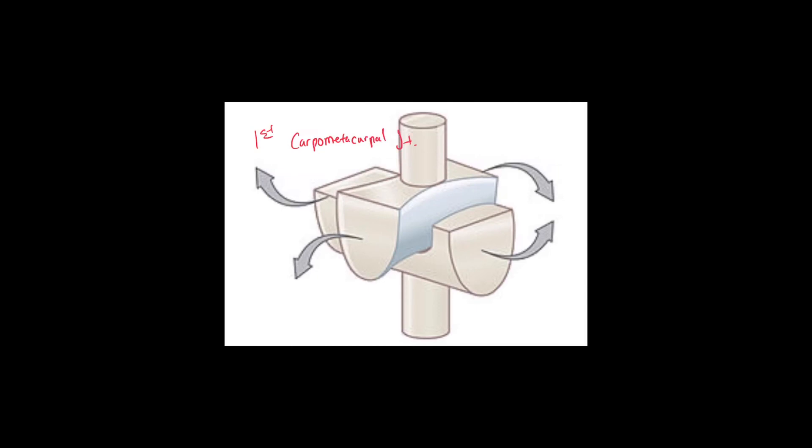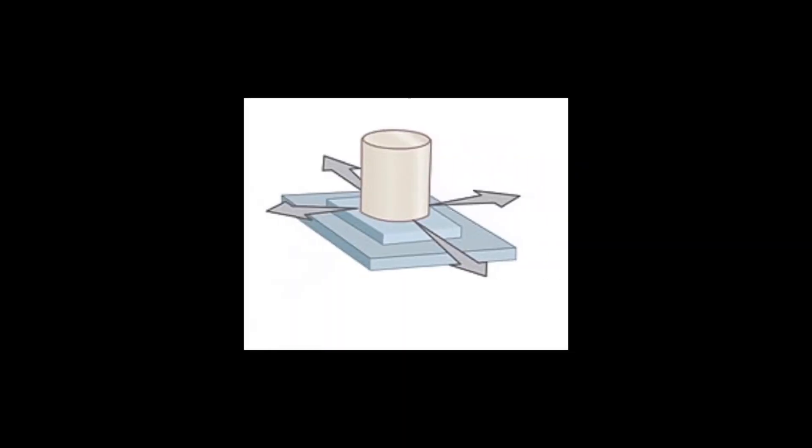And finally, the last subcategory of the synovial joints is the planar joint. Now similar to a planar suture, the planar joint only has an articulation between a flat surface or a blunt surface, and that's all it is, as you can see here in this image.